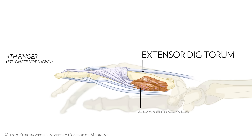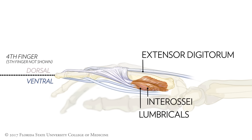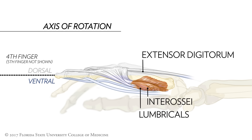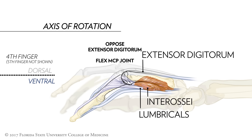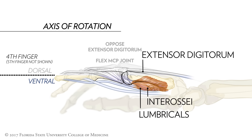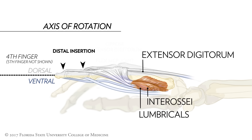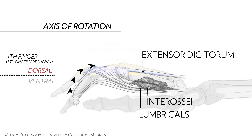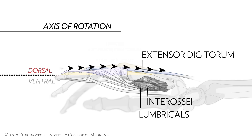Because the tendons of the lumbricals and interossei pass ventral to the axis of rotation of the metacarpophalangeal joint, their contraction clearly opposes extensor digitorum and functions to flex this joint. On the other hand, since the more distal insertion of these muscles into the extensor expansion transmits the force of their pull dorsal to the axis of rotation of the proximal and distal interphalangeal joints, they also function, in concert with extensor digitorum, to extend these joints.